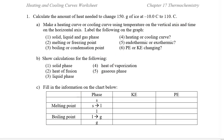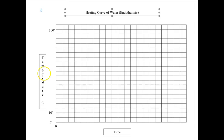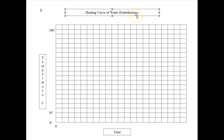Letter A: make a heating curve or cooling curve using temperature on the vertical axis and time on the horizontal axis. Label the dependent axis as temperature in degrees Celsius, the independent variable as time on the x-axis, and the title of the graph as 'Heating Curve of Water.' Notice it is endothermic. So that answers questions four and five.